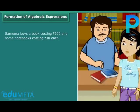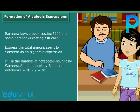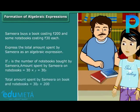Samira buys a book costing 200 rupees and some notebooks costing 30 rupees each. Express the total amount spent by Samira as an algebraic expression. If y is the number of notebooks bought by Samira, the amount spent on notebooks is equal to 30y. The total amount spent by Samira on the book and notebooks is equal to 30y plus 200.